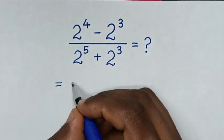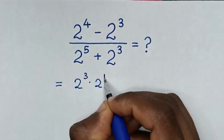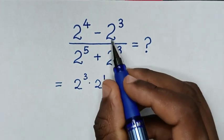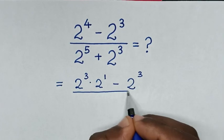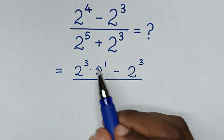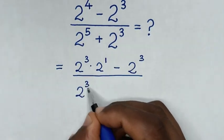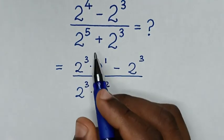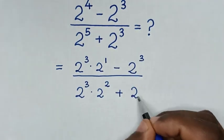So, 2 power of 4 is the same as 2 power of 3 times 2 power of 1, because power of 3 plus power of 1 is power of 4. Then minus 2 power of 3. In the denominator, we make 2 power of 3 common. So, 2 power of 5 is the same as 2 power of 3 times 2 power of 2, because power of 3 plus power of 2 is power of 5, then plus 2 power of 3.